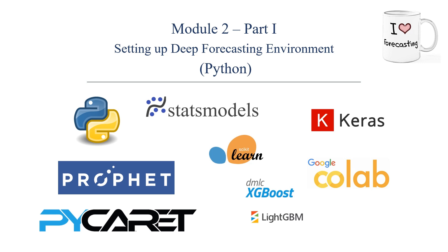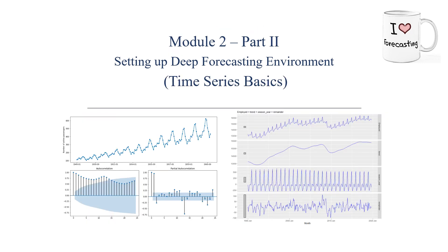In module two, we're going to set up our deep forecasting environment. In this course, I'm going to use Python, and we'll cover different Python packages for different tasks. For the econometric part, we'll use the statsmodels package and PyCaret. For machine learning, we'll do basic machine learning from scratch using scikit-learn, then the automated version with PyCaret. For Facebook Prophet, we'll use the Prophet package. For the deep learning section, we'll use Keras. In part two of module two, we'll do some basic time series operations in Python, assuming you have basic Python background but haven't done time series work in Python before.